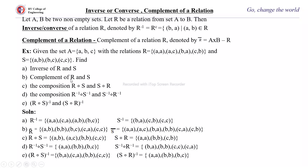To find the complement of R: R̄ = A×B − R. The full cross product A×A consists of (a,a),(a,b),(a,c),(b,a),(b,b),(b,c),(c,a),(c,b),(c,c). Excluding the elements of R={(a,a),(a,c),(b,a),(c,b)}, the complement R̄={(a,b),(b,b),(b,c),(c,a),(c,c)}. Likewise, you can find S̄.